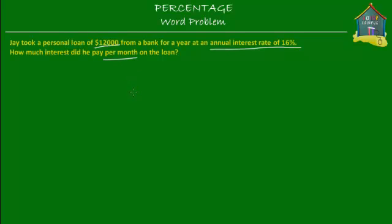What Jay did was he took a personal loan of $12,000 from a bank. Let's talk about borrowing money first. We borrow money from our friends all the time and we lend money to our friends all the time. But between friends, when we borrow or lend money — suppose you borrowed $5 from a friend — then a few days later you return him the $5, and that was the end of the story.